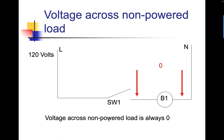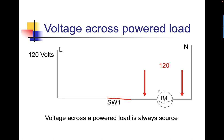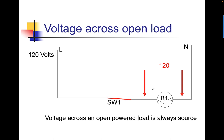Voltage across a non-powered load is always zero. I don't have any difference in potential because the current is stopping here — everything is on the neutral side because I don't have my line side coming to the load. Voltage across a powered load is always source if it's the only load in series. Voltage across an open powered load — in other words, the filament in the light bulb is broken — is also always going to be source.